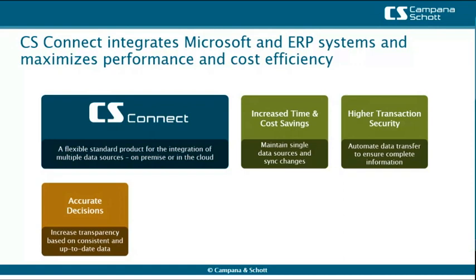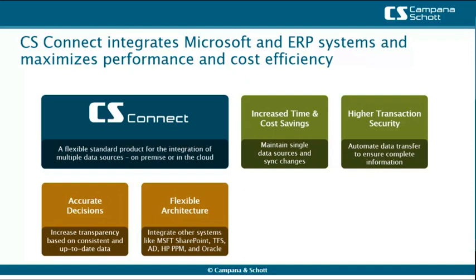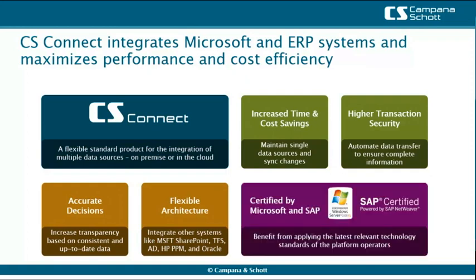Provide complete and reliable information to facilitate accurate business decisions, prevent redundant data administration, and reduce manual booking corrections. Due to its flexibility, CS Connect can also be used to integrate other systems like Microsoft SharePoint, Team Foundation Server, SAP PPM, Active Directory, HP PPM, and Oracle.